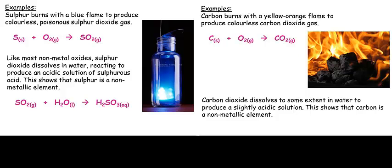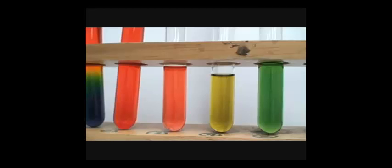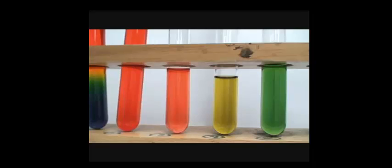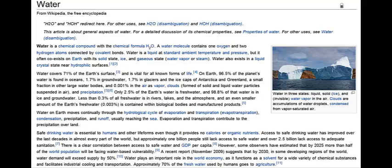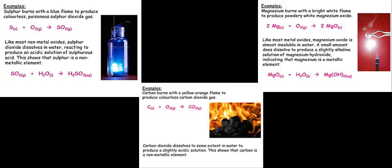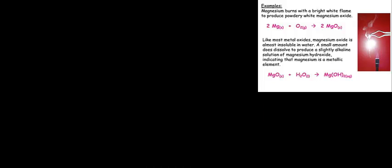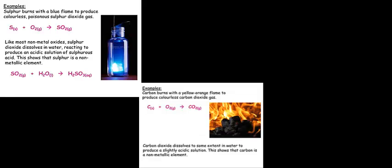With carbon, carbon dioxide dissolves to some extent in water to produce slightly acidic solution. This is a similar pattern we will see with other non-metal oxides. Do not assume all non-metal oxides are acidic. A few are neutral. A good example is water, which is hydrogen oxide. Another example would be carbon monoxide.